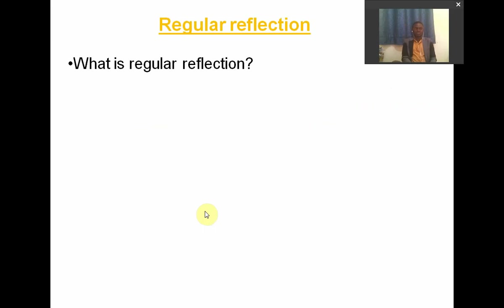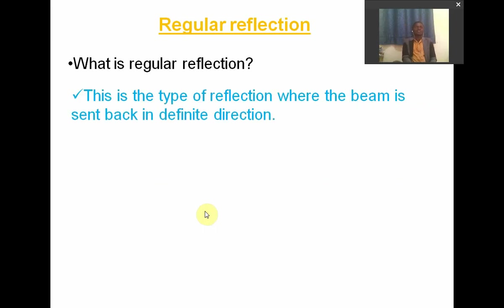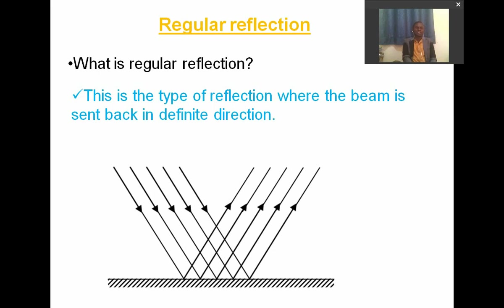What is regular reflection? Regular reflection is the type of reflection where the beam is sent back in a definite direction, as you can see in the diagram. That diagram illustrates regular reflection. The surface where the cursor is pointing is a smooth surface. Because it is smooth, when the light rays hit onto this smooth surface, they are reflected back in a definite direction.